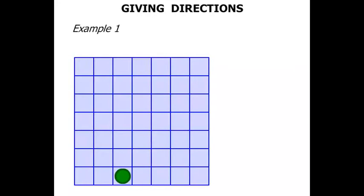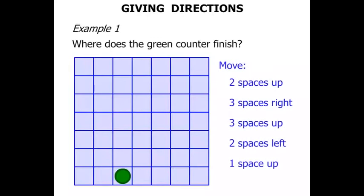Example 1. We've got a grid with a green counter, and we're asked where does the green counter finish? So we've got some directions to follow. It's going to finish either A, B, C, D, E, F or G. It's going to finish in one of those spots.